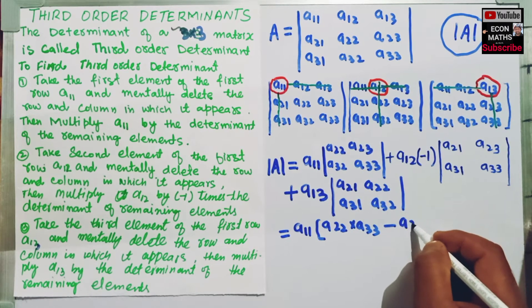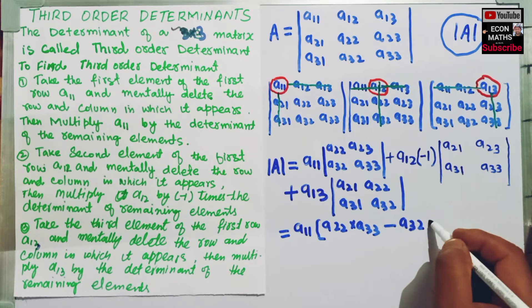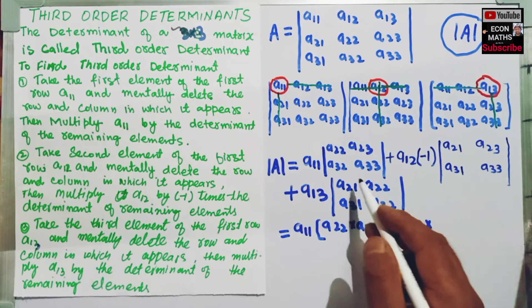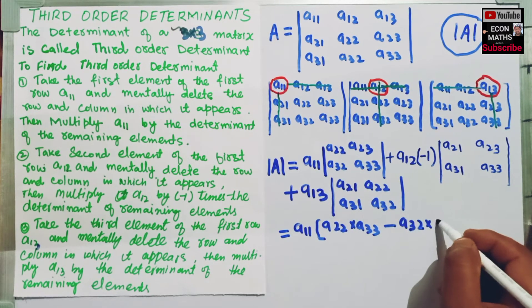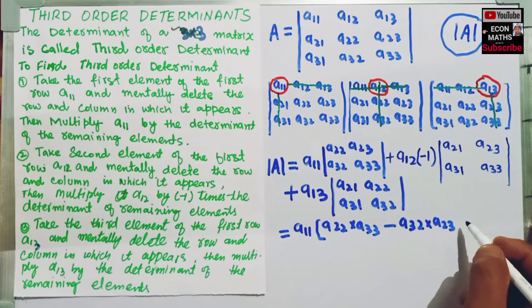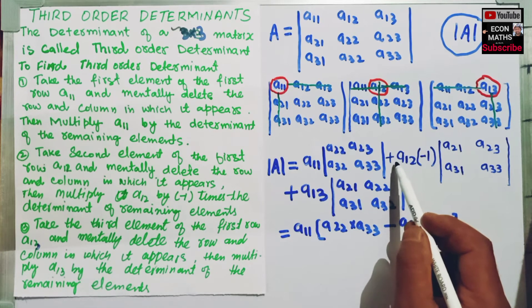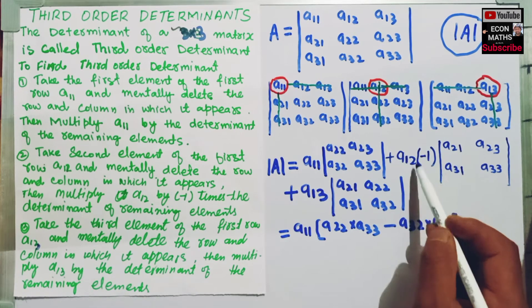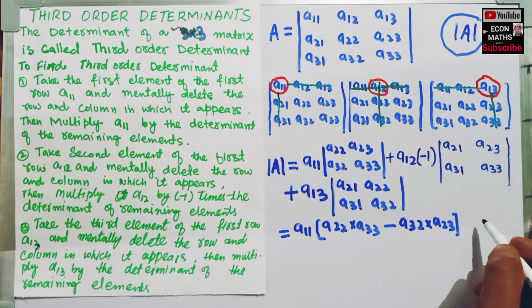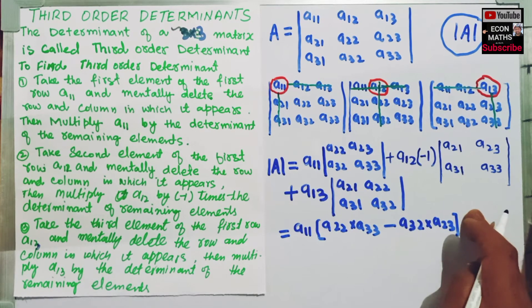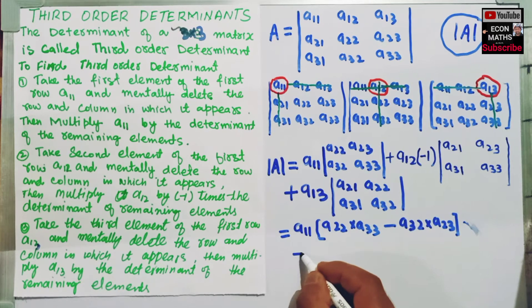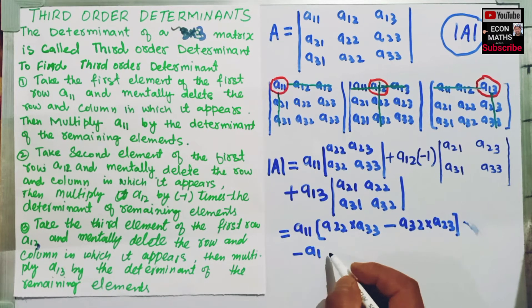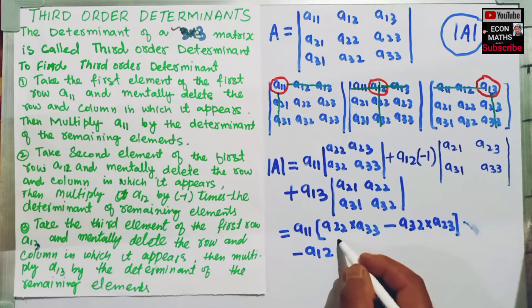That is A32 times A23. Now here, A12 times minus 1, so this will become minus A12.